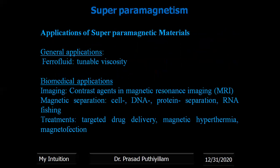The main applications of superparamagnetic materials: the first general application is as a ferrofluid, where its viscosity can be tuned or controlled based on magnetism — by applying an external magnetic field we can control the viscosity. Viscosity is the ability to flow. Other applications include biomedical applications, mainly imaging such as magnetic resonance imaging, magnetic separation of cells, DNA, protein, or RNA, and treatments like targeted drug delivery, magnetic hyperthermia, and magnetostriction.